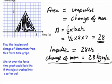So that's what we do, dead simple. To find the impulse or change of momentum from a force time graph, we work out the area. And that area is equal to the impulse, which is equal to the change of momentum. And remember those units.